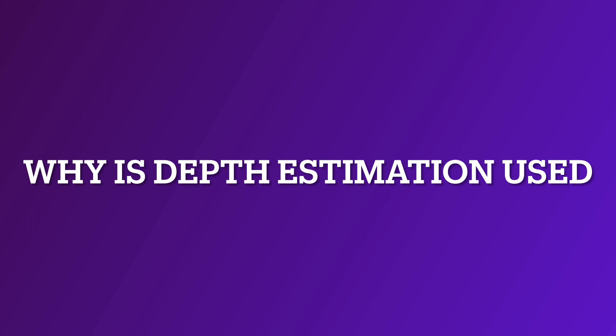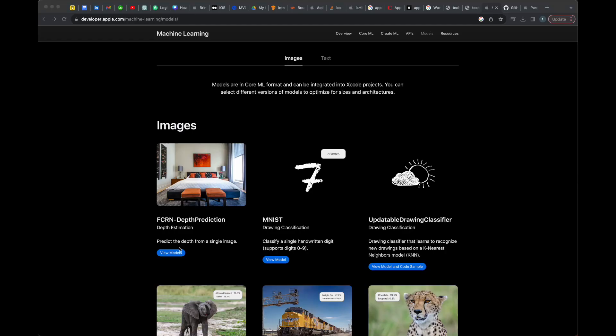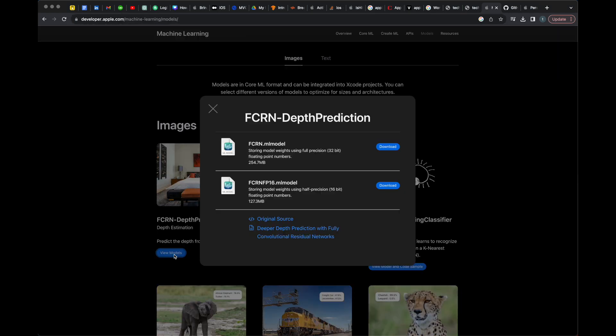We can use depth estimation to remove haze and fog from the foreground inside an image, improve the focus on foreground objects and blur the background — I have already created a tutorial on that using another model from the Core ML website. It can also help you calculate relative distances from a camera as well as the relative size of each object compared to the others inside your image.